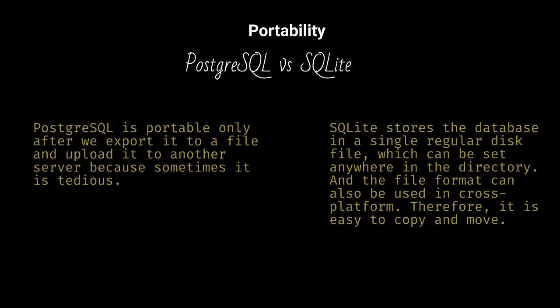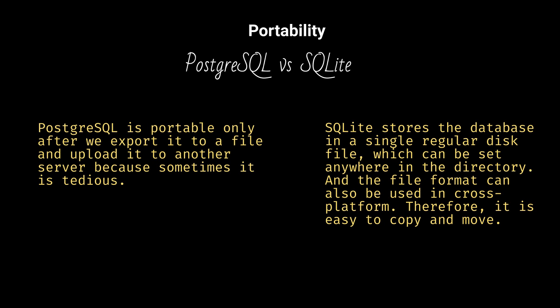PostgreSQL is portable only after exporting it to a file and uploading it to another server, which can sometimes be tedious. SQLite stores the database in a single regular disk file, which can be placed anywhere in the directory, and the file format can also be used cross-platform, making it easy to copy and move.